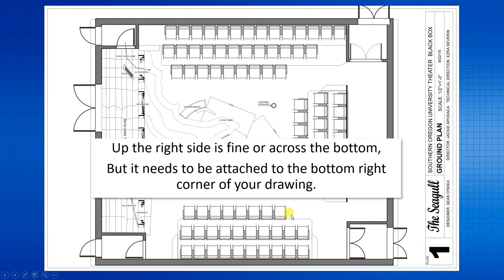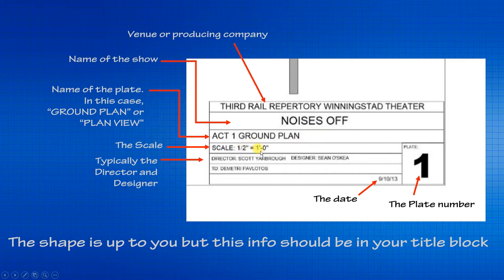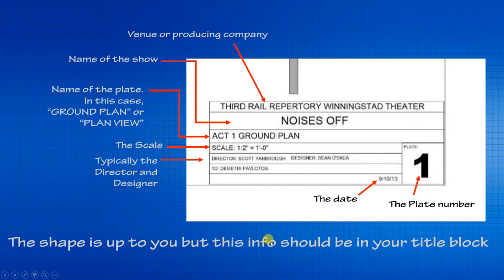You can put the title block in a different orientation — I often run it off the side of the drawing in a black box, which is neat and tidy. The basic information on a theater production title block includes the venue or producing company, the name of the show, the plate name, the scale, the director, the designer's name, the technical director, and the date. The date is especially important when there are different versions of drawings — you want to know which version you're looking at. The plate number goes in the lower corner.